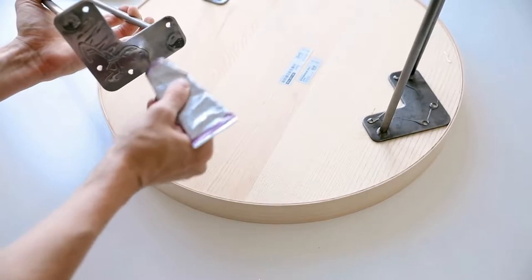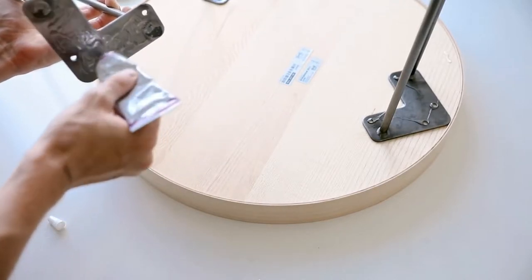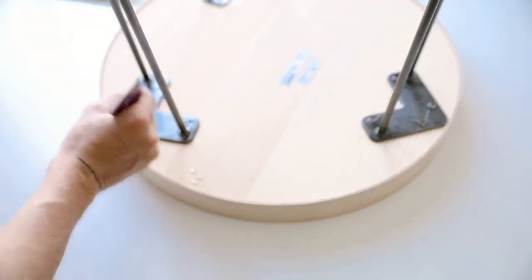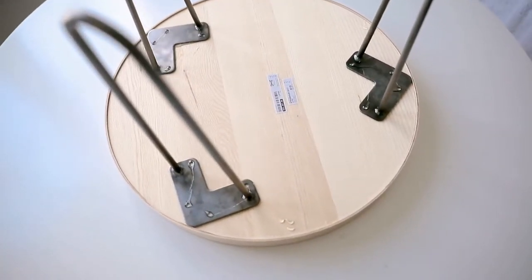I suggest just letting it dry overnight and then once you are completely done you have a perfect little side table or nightstand, whatever you want to use this for. It could even be a plant stand.